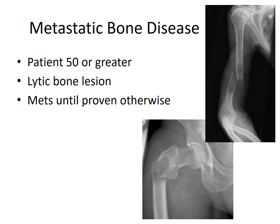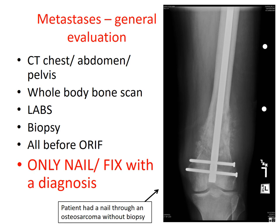Metastatic bone disease has to be considered in a patient greater than 50 with a lytic bone lesion, and in this instance we say this is likely metastatic disease until proven otherwise. The general evaluation for metastatic disease includes a CT scan of the chest, abdomen, and pelvis; a whole body bone scan; labs; and a biopsy. All of this should be performed before surgical fixation.